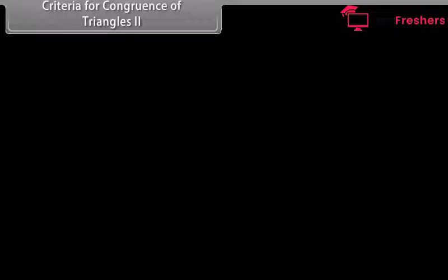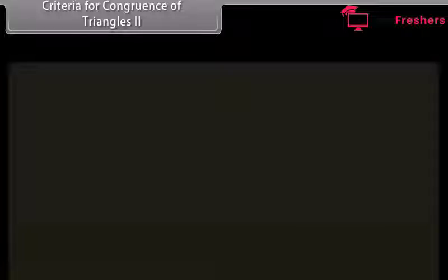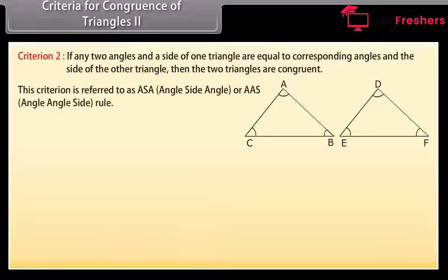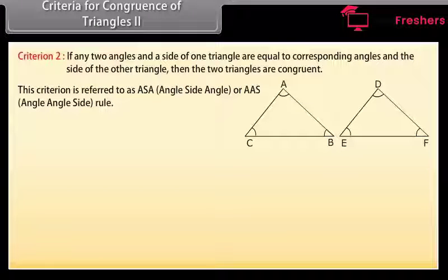Criteria for Congruence 2: if any two angles and the included side of one triangle are equal to the corresponding angles and side of the other triangle, then the two triangles are congruent. This criterion is referred to as ASA (Angle Side Angle) or AAS (Angle Angle Side Rule).